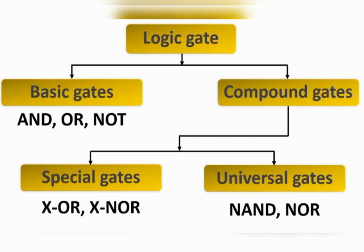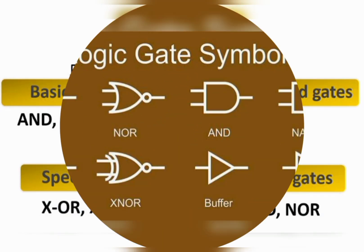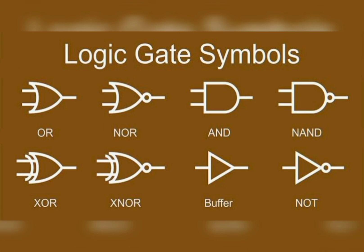So primarily we have five universal logic gates, two extra special gates, and three basic gates. These are the logic gate symbols, and we'll dive right into the three basic logic gates.